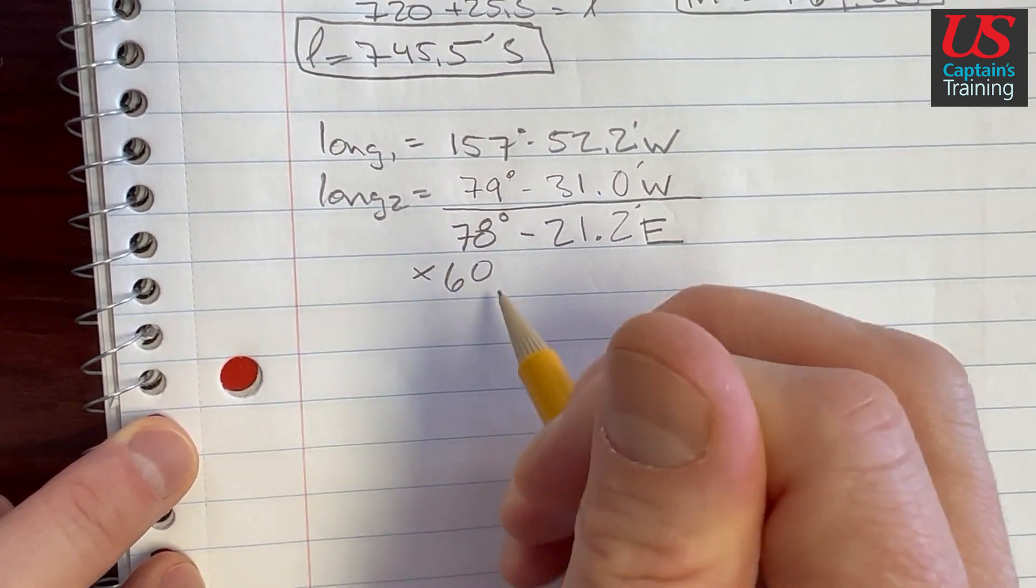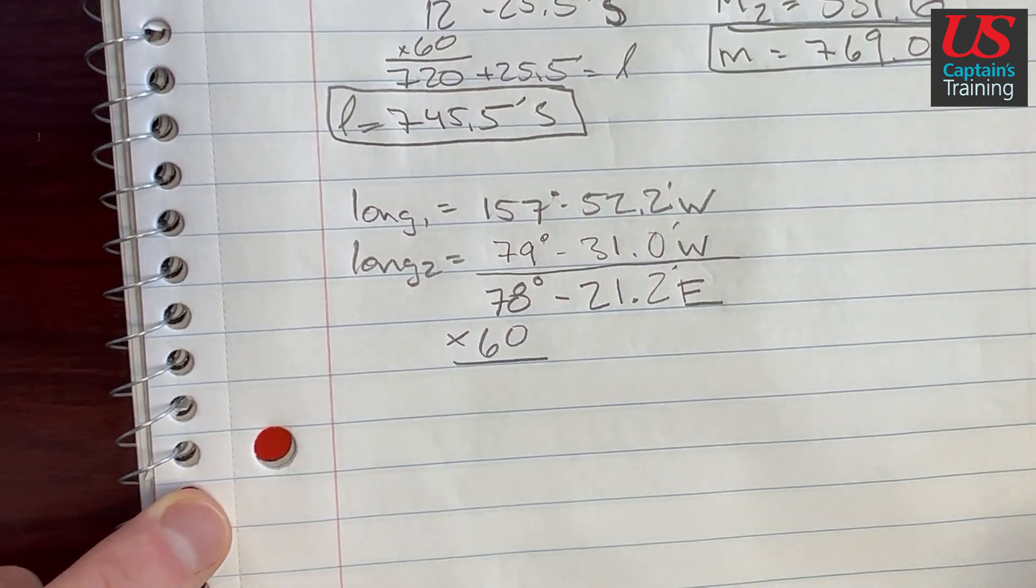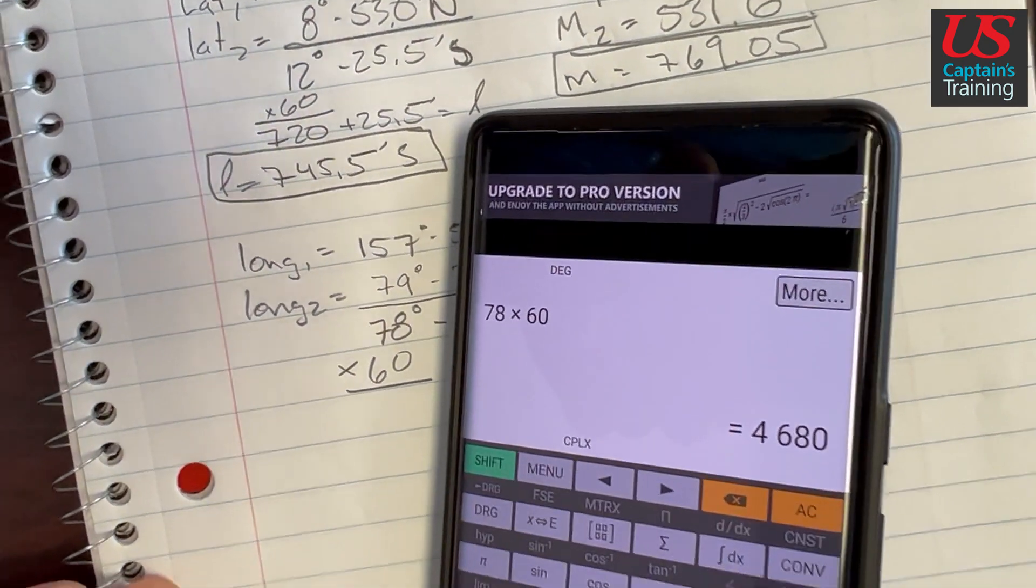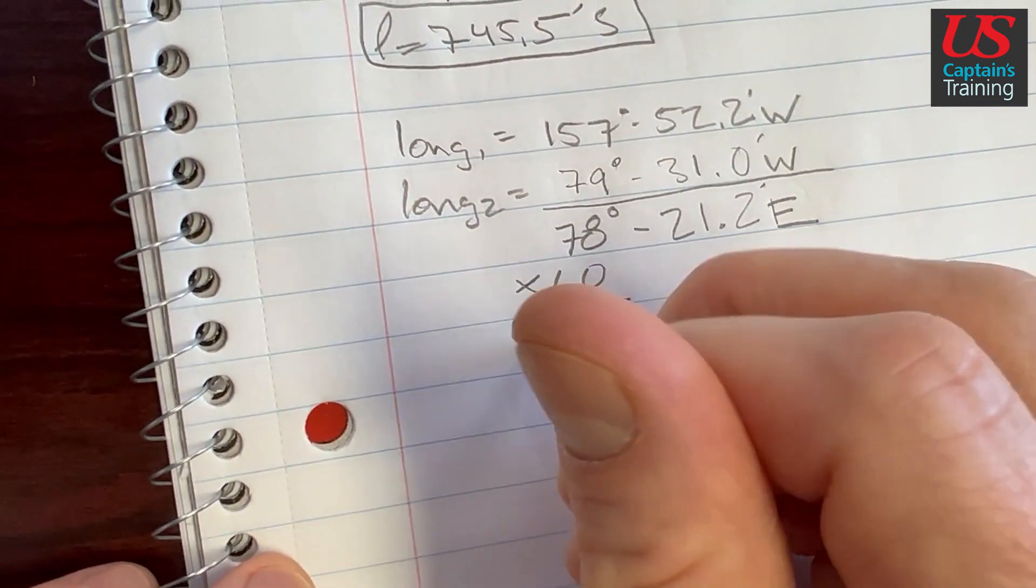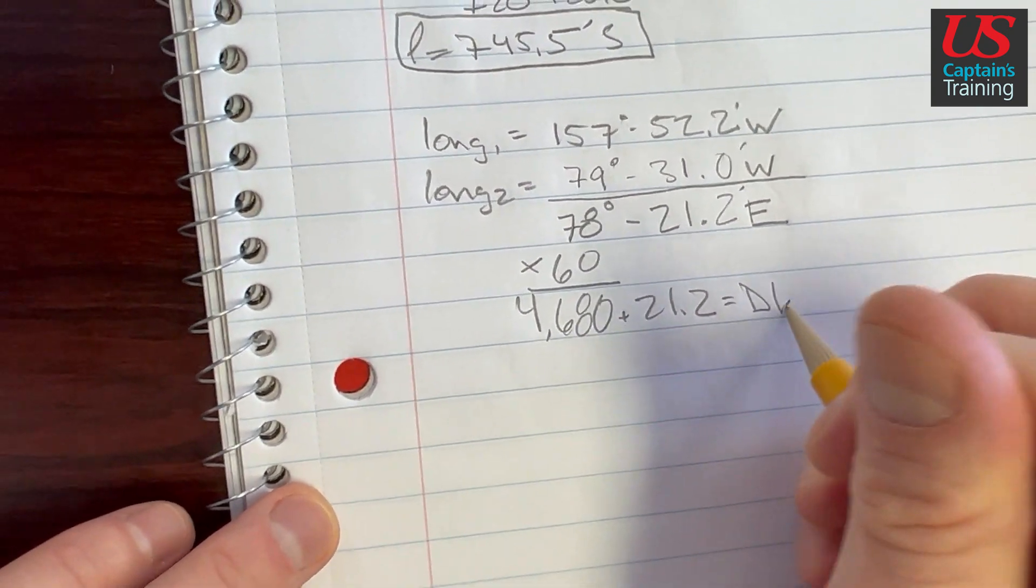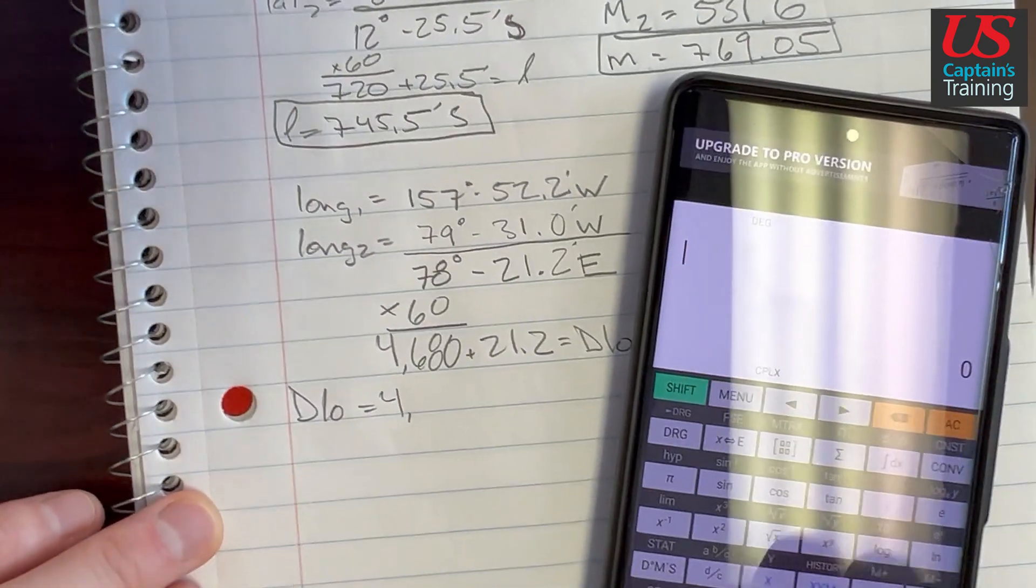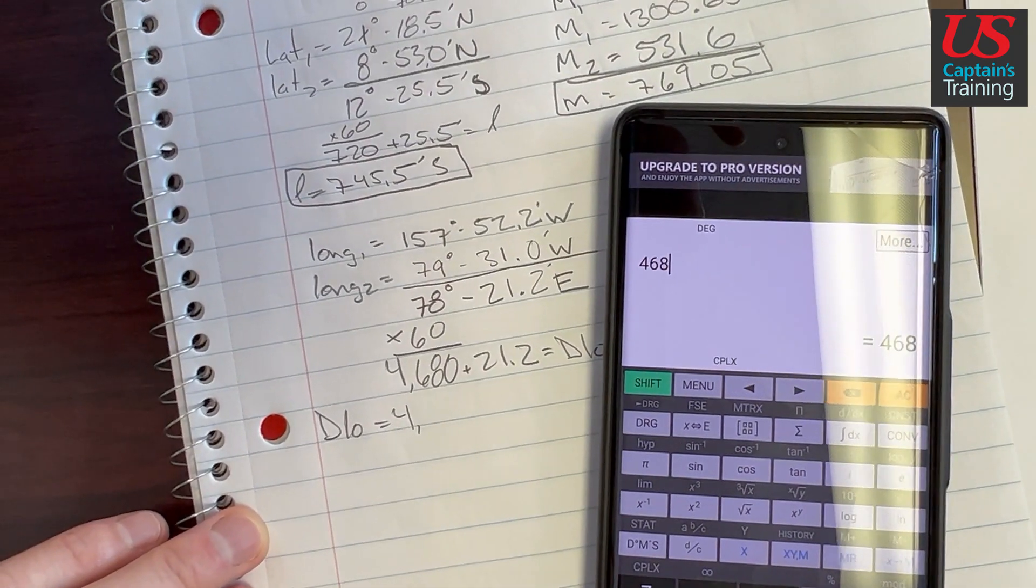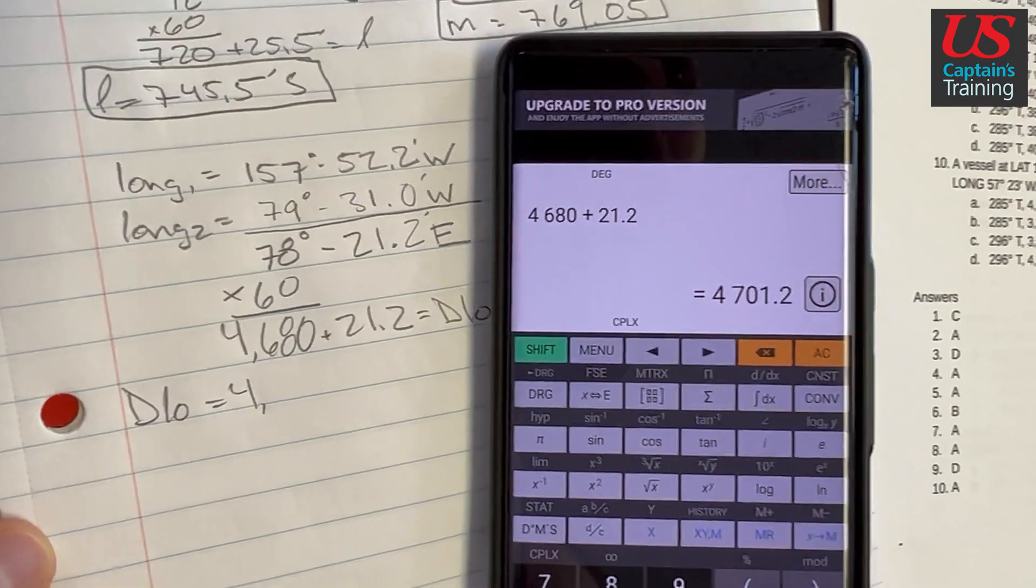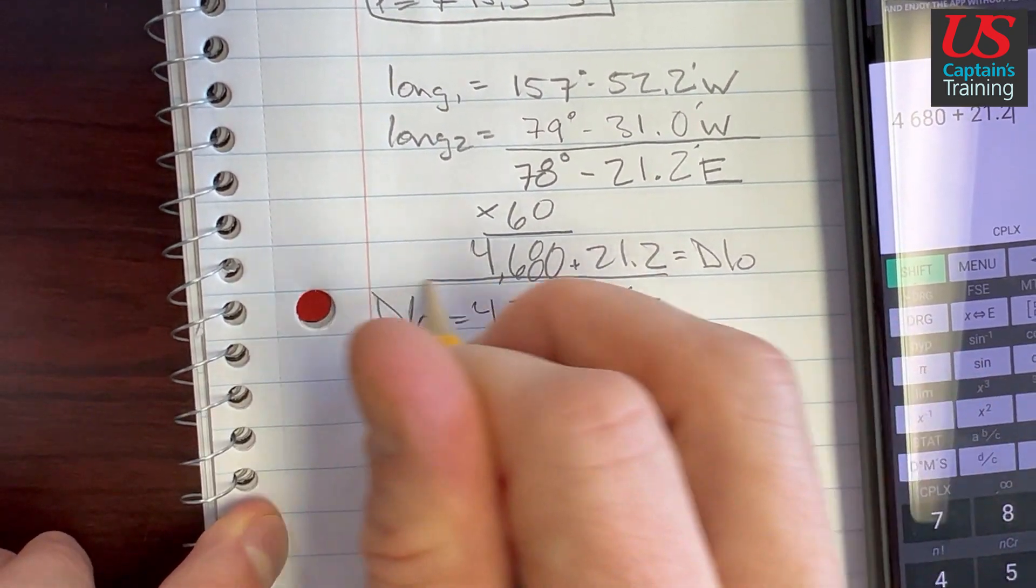Let's change these degrees to minutes because there's 60 minutes in one degree. So when we times 78 by 60, we get minutes. 78 times 60 equals 4680. 4680 plus these 21.2 minutes will equal our D low. So D low equals 4701.2 minutes east. That's our D low.